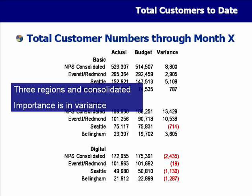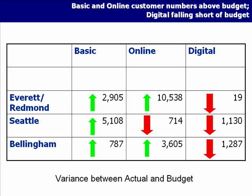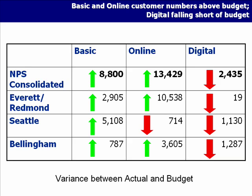Let me show you the improved slide. First, I have a clear headline: 'Basic and online customer numbers above budget — digital falling short of budget.' Presenting it this way, I'd say: our basic and online numbers are okay, but digital is really falling short. Each region's basic numbers and the three online numbers are doing well, but the digital areas are not — especially online in Seattle. Looking at the variance between actual and budget, consolidating across the entire region, basic and online are holding positive but digital is an area we need to focus on.